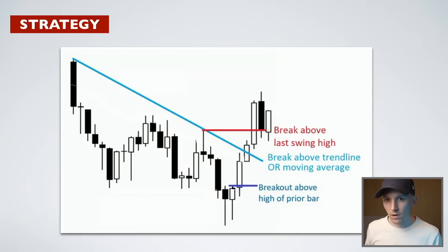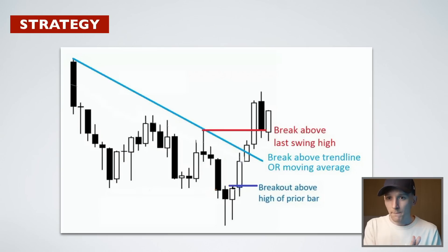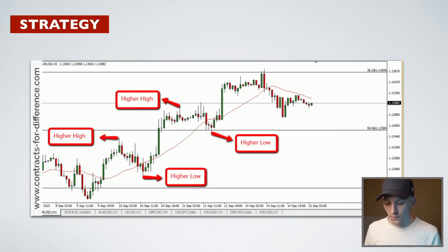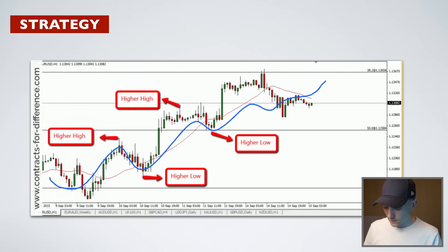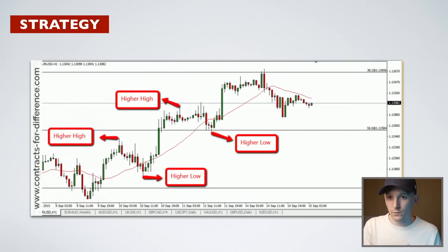A breakout strategy waits for breakouts of trends and then trades them — once you get a breakout it tries to make money from that move. Then there's a trend-following strategy: if you see a heavy trend, either up or down, and you think we're in a part of the market where Bitcoin should be moving up — maybe after a halving — then you want a momentum or uptrend type strategy.